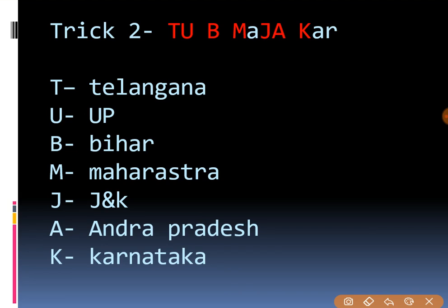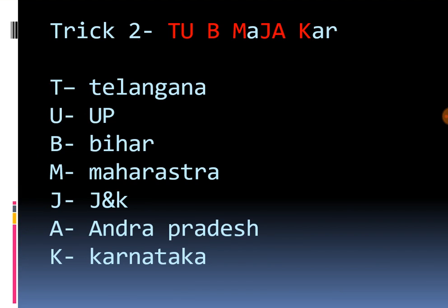The second trick is 'TUM BI MAJA KARO'. The letters in capital and red represent the states, written in vertical manner: T for Telangana, U for UP, M for Maharashtra, B for Bihar, I — A for Andhra Pradesh, J for Jammu Kashmir, A for — K for Karnataka. Both tricks are very simple mnemonics you can remember easily.